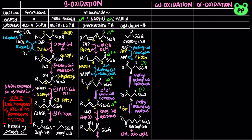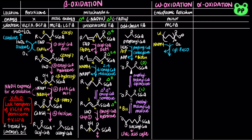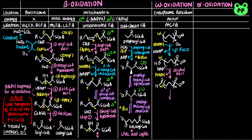Besides oxidation at the beta-carbon, fatty acids can also be oxidized at the carbon most distant from the carboxyl group, known as the omega-carbon. Omega oxidation occurs in the endoplasmic reticulum of liver and kidney, and it is typically a minor pathway for oxidation of medium-chain fatty acids. First, a mixed-function oxidase known as cytochrome P450 introduces a hydroxyl group onto the omega-carbon. The oxygen for this group is derived from molecular oxygen, and the reaction is coupled to the oxidation of NADPH to NADP+. Next, alcohol dehydrogenase oxidizes the omega-hydroxyl group to an aldehyde, coupled to the reduction of NAD+ to NADH. Then aldehyde dehydrogenase further oxidizes the omega-aldehyde to a carboxyl group, also coupled to the reduction of NAD+ to NADH, ultimately producing a fatty acid with a carboxyl group at each end.